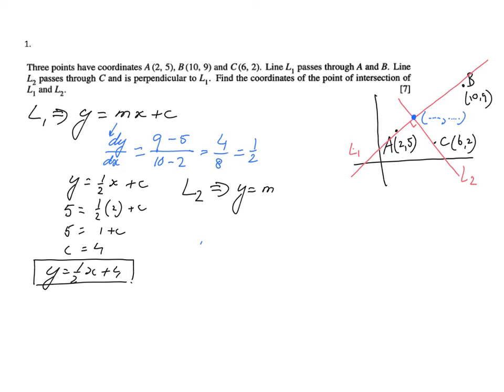Again, y equals mx plus c, but now to find the gradient, normally I need two points. Like here I have point A, point B, but for line 2 I only have one point. But they also tell me it is perpendicular to line 1. And what can you say about the gradients of perpendicular lines? That they are each other's reciprocal but then the opposite sign, so the negative reciprocal.